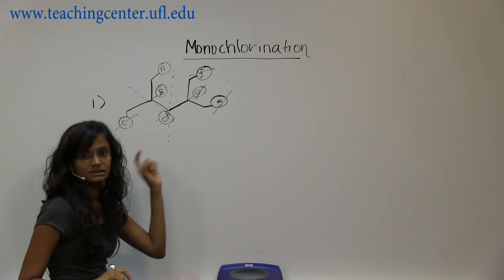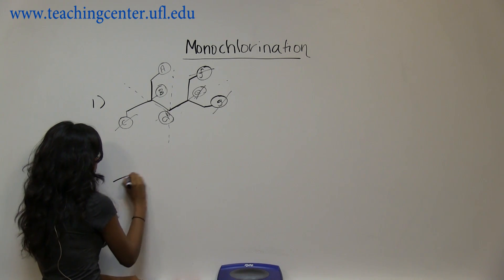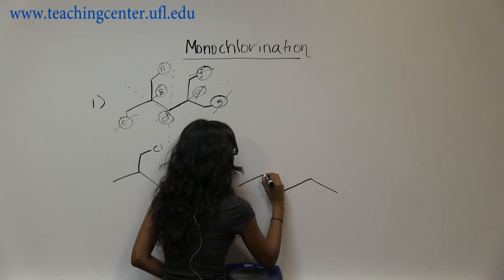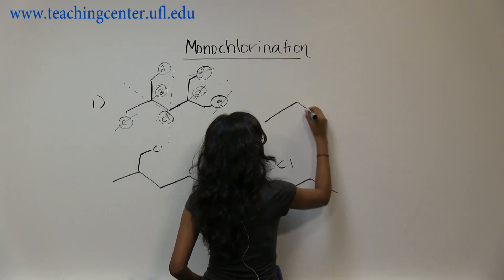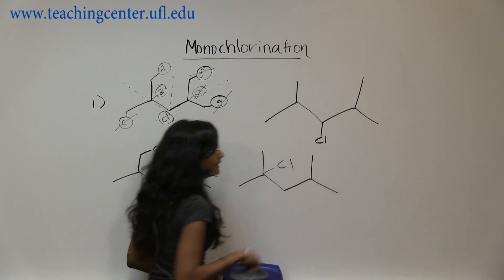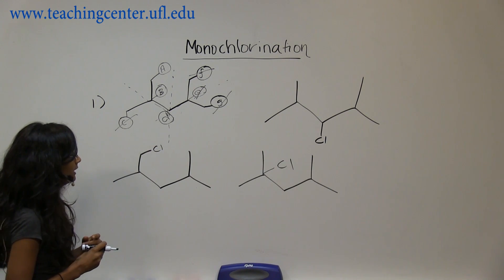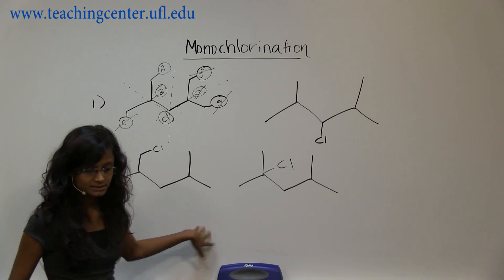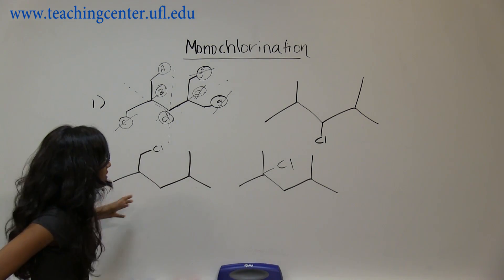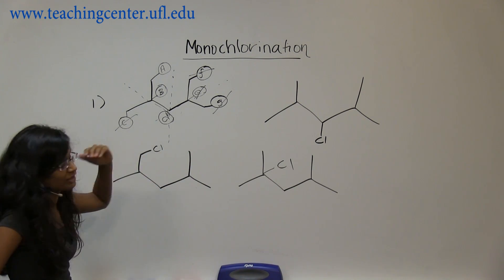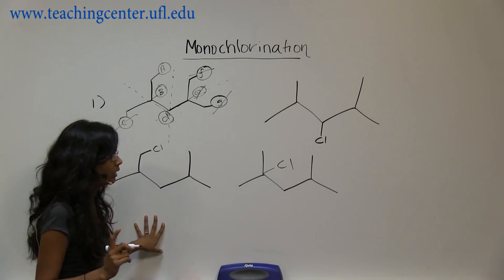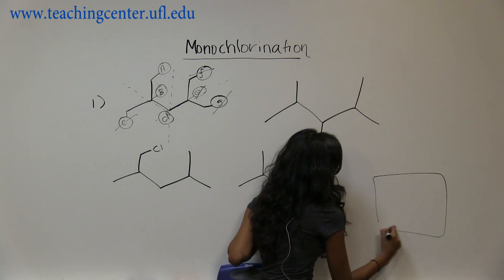So the only three different ones are these. The product for each is simply replacing the hydrogen with chlorine. Don't forget the other methyl group that's still there. So these are the three distinct products we get. How many products without any stereoisomers? We have one, two, and three — so the answer for number one is three.